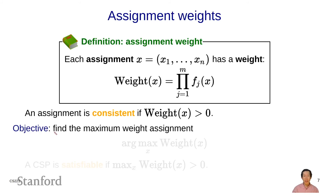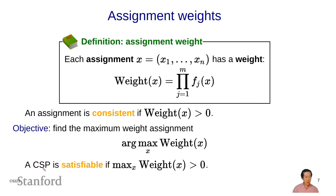The objective of a constraint satisfaction problem is to find the maximum weight assignment, written mathematically as argmax over all possible assignments x of weight(x). A CSP is satisfiable if the maximum weight assignment has weight greater than zero — another way to say this is whether there exists some consistent assignment. Note that weights in factor graphs and CSPs must be non-negative, unlike weights in machine learning which can be negative.